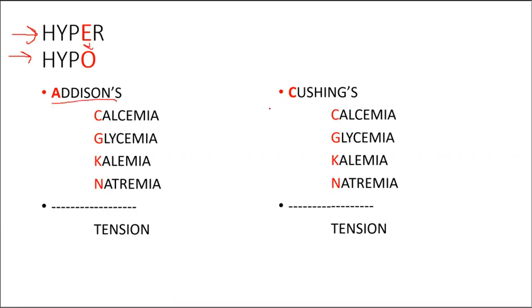I'm going to write Addison's and I'm going to write Cushing's. Why? Because I know the a in Addison's comes before the c in Cushing's.